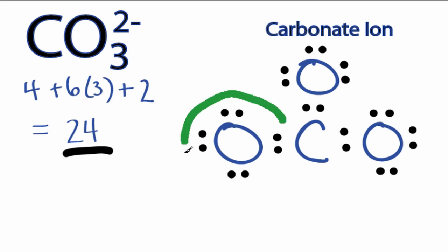All have octets, 8 valence electrons. The carbon, however, only has 6 valence electrons.